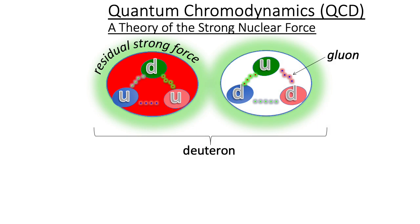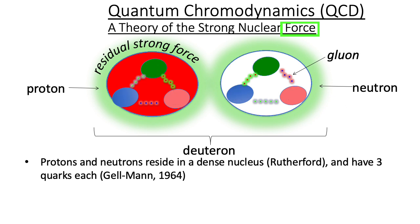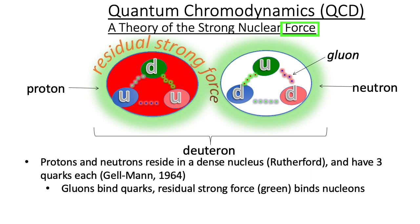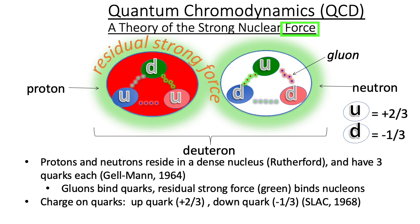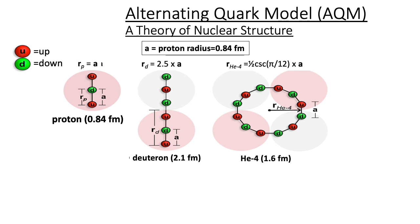What we know about quarks is informed by the current paradigm, quantum chromodynamics — but this is primarily a theory of the strong nuclear force. Protons and neutrons reside in a dense nucleus and have three quarks each. Gluons bind quarks and the residual strong force binds nucleons. The charge on quarks is known, but according to QCD, quarks play no direct role in nuclear structure. Here we present the alternating quark model, which is primarily a theory of nuclear structure.